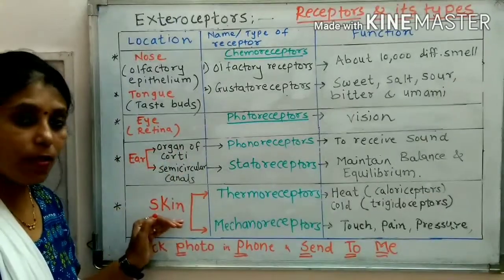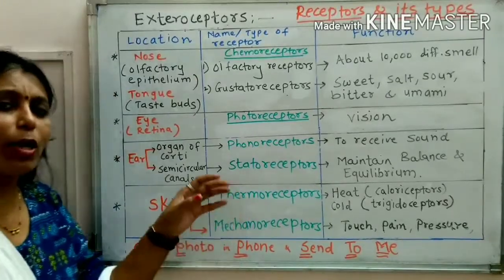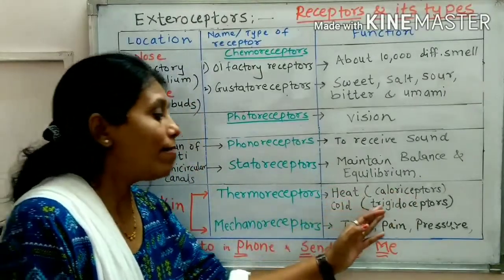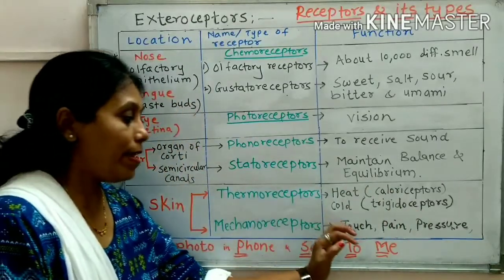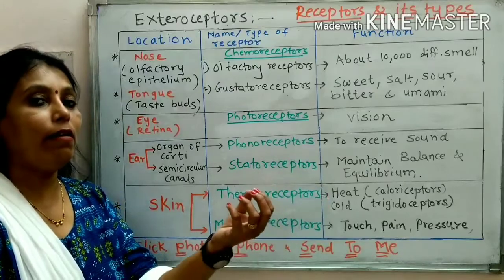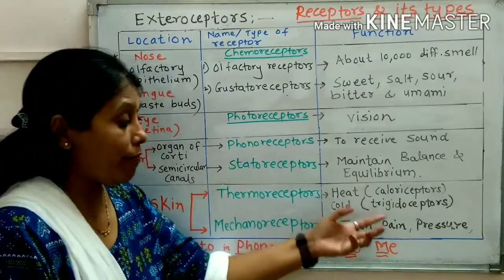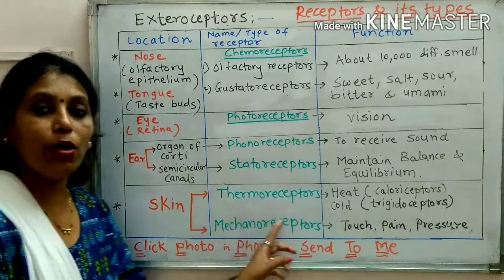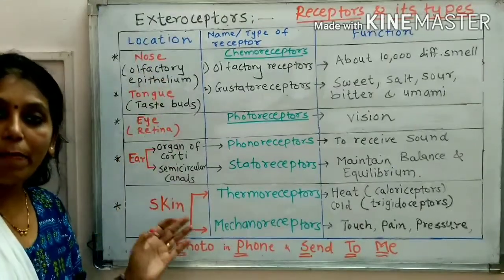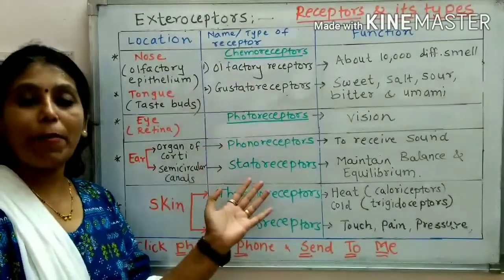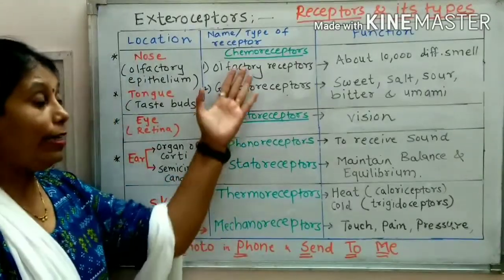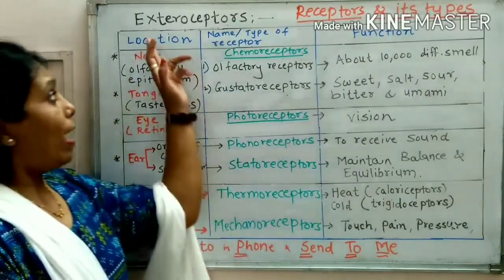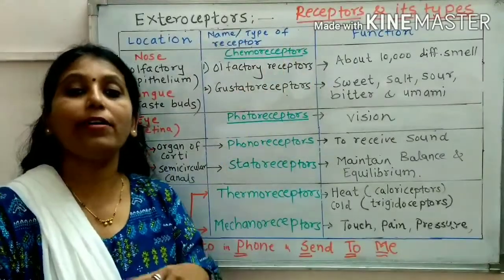Now come to skin. The receptors here are thermoreceptors — they are related to either heat, called calorie receptors, or cold, called frigidoreceptors. Mechanoreceptors are responsible for the feeling of touch, and we also have sensation for pain and pressure — all due to mechanoreceptors. These all are the types of extero-receptors.